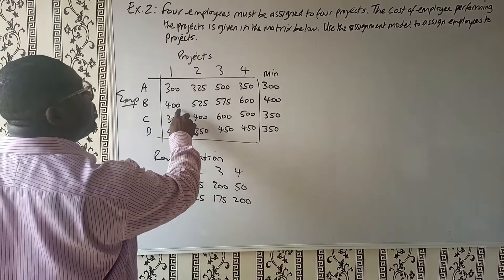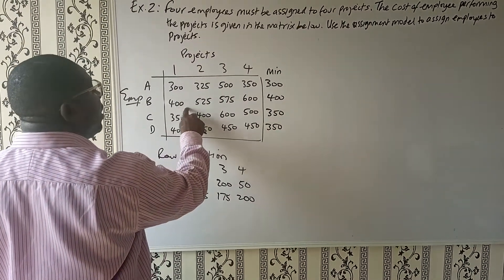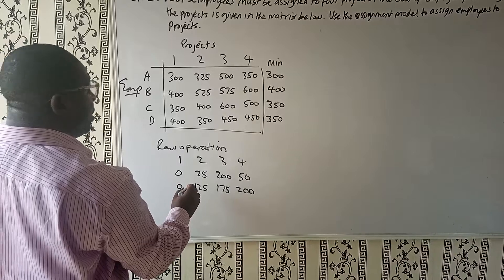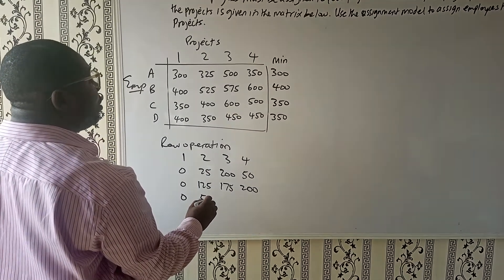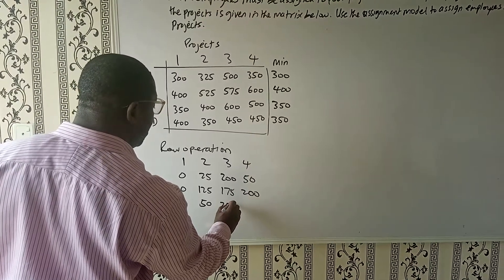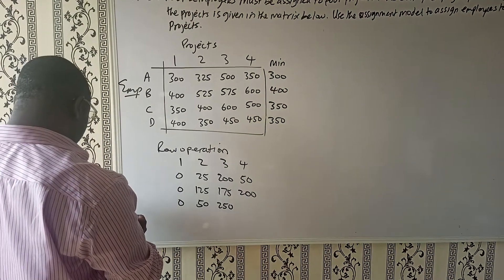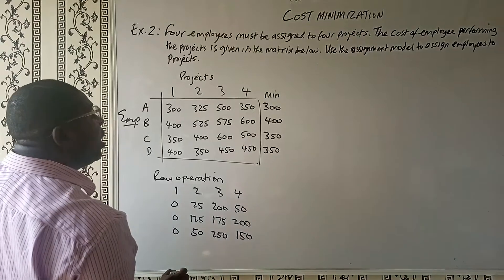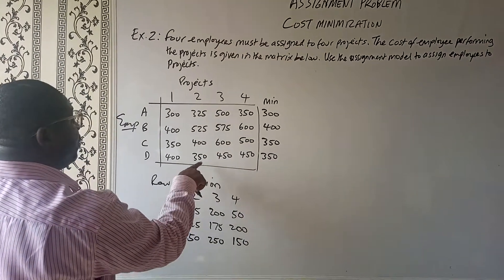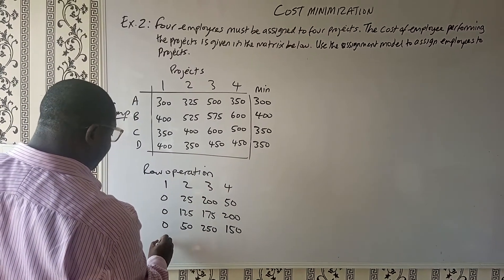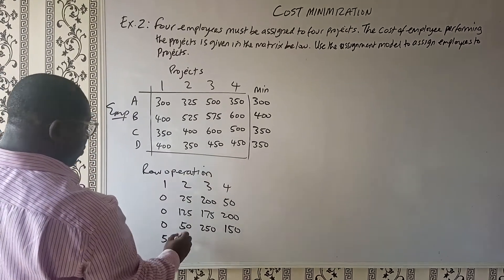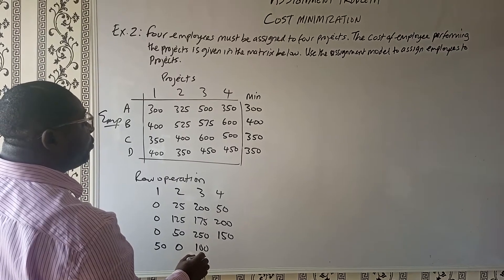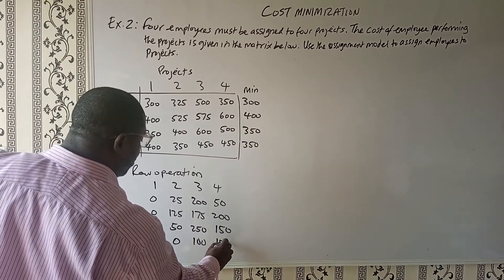We're deducting the minimum value from itself and all the others. For row 3, minimum is 350: 350 minus 350 gives 0; 400 minus 350 gives 50; 600 minus 350 gives 250; 500 minus 350 gives 150. For row 4, minimum is 350: 400 minus 350 gives 50; 350 minus 350 gives 0; 450 minus 350 gives 100; 450 minus 350 gives 150.